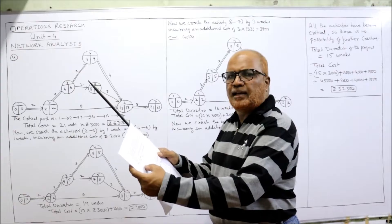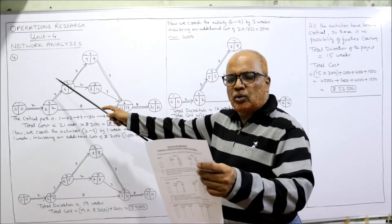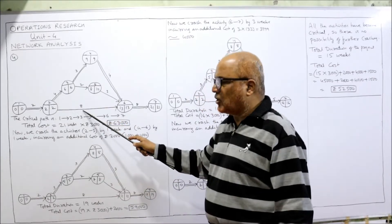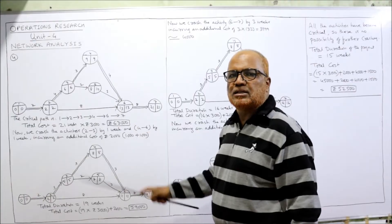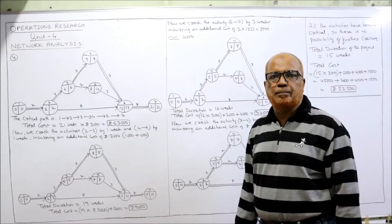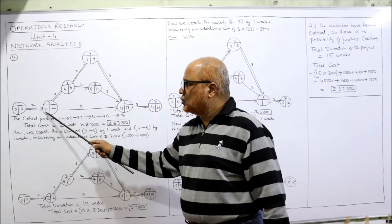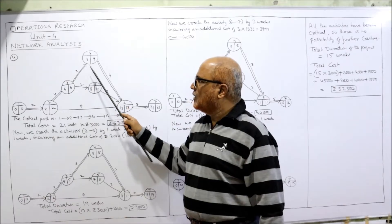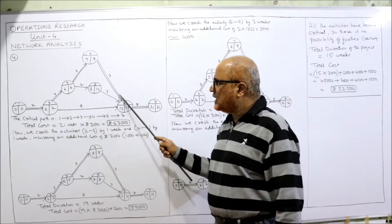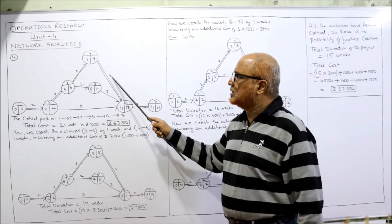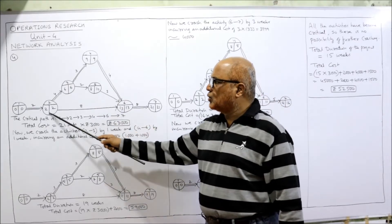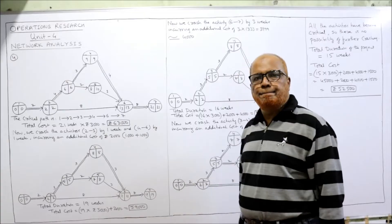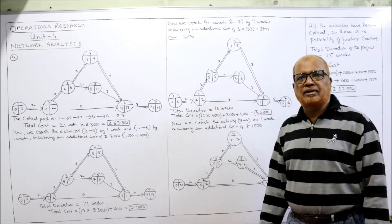Now write the normal times on each activity: 1→2 is 2, 2→3 is 4, 2→6 is 8, 3→4 is 3, 3→5 is 2, 4→6 is 4, 5→6 is 3, 6→7 is 8. For the forward pass EST: 0+2=2, 2+4=6, 6+3=9, 6+2=8. At node 6, three arrows merge — take the maximum: 9+4=13, 8+3=11, 2+8=10 — the highest is 13. Then 13+8=21. Forward pass complete.